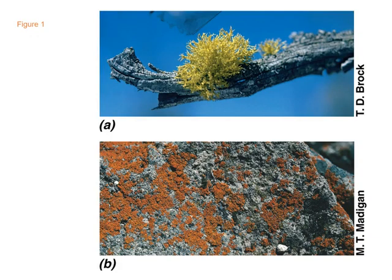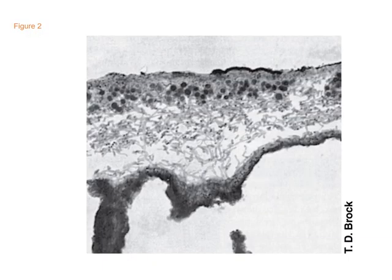In this slide you can see a lichen association on a tree trunk and bare rock. These associations provide food and nutrients to each other.